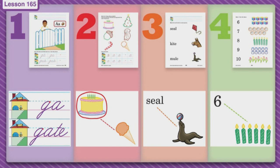We're going to do some matching and we're going to do some circling. What does long A say again? A. So let's think about what pictures have that sound in it. Listen to each one and then say it with me. Cake. Cake.